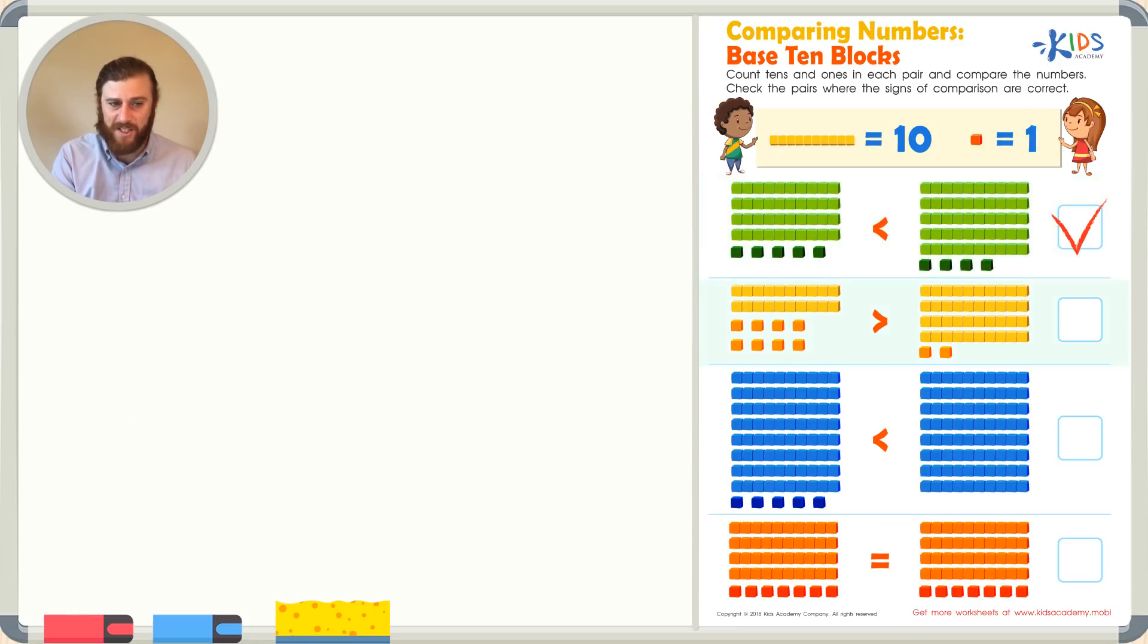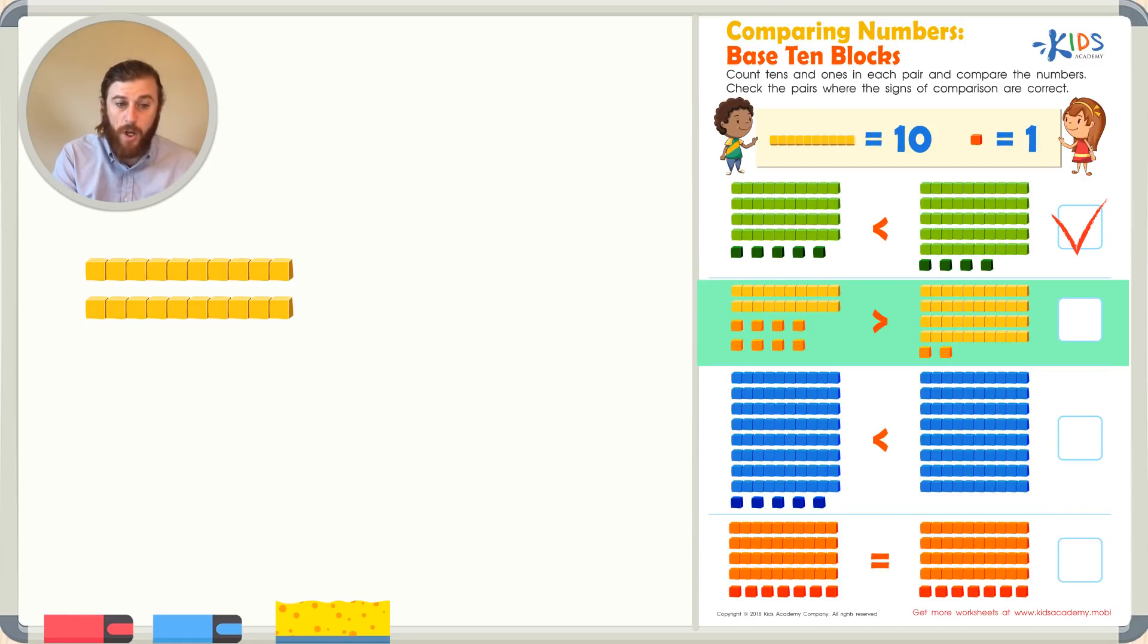Let's take a look at our next example. In this problem, on the number on the left, we have two tens. We know that equals 20. Let's see how many ones we have. Let's count from 20. We have 21, 22, 23, and 24, 25, 26, 27, 28. There are 28 base 10 blocks in the number on the left.